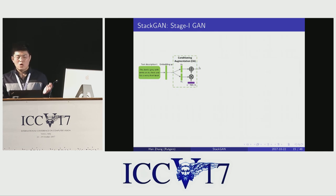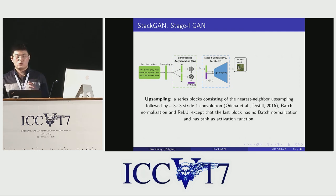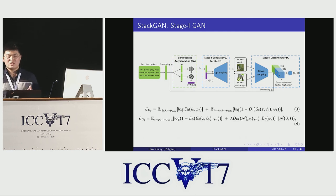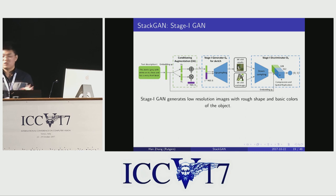Once we get the condition variable, we feed it through the Stage 1 GAN to generate the low-resolution image. The condition variable is first concatenated with the noise vector, then reshaped into 2D space and passed through a series of up-sampling blocks to get 64 by 64 images. The discriminator takes the image and passes it through a series of down-sampling blocks to get the image feature, which is then concatenated with the text feature and passed through more convolutions to get the decision score. During training, we minimize the generator and discriminator losses alternately. After training, Stage 1 GAN generates low-resolution images, but they usually have shape distortions and may lack some object parts.